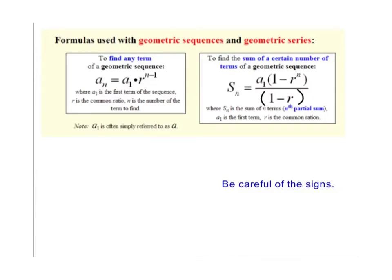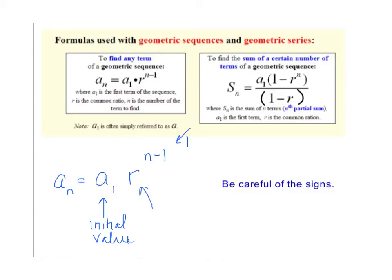Here are the formulas used to find geometric sequences and series. To find any term: a sub n equals a sub 1 times r to the n minus 1. This looks very similar to an exponential problem where a sub 1 is the initial value, r is the rate, and the exponent is time.